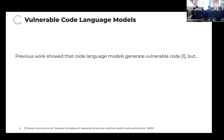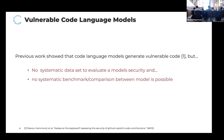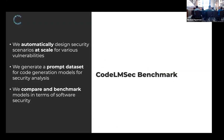Previous work has already shown that generated code can contain vulnerabilities. However, so far there has been no systematic dataset to evaluate the security of generative models, and no benchmarking comparison between different models has been possible. In this work, we designed an automatic approach to generate a dataset for security analysis across different vulnerability types, and we published this dataset for benchmarking code language models, along with a comparison between different models in terms of security.